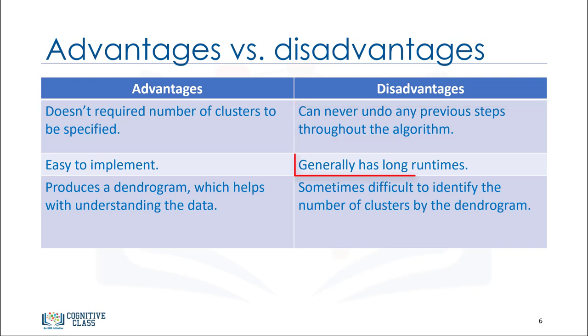Second, the time complexity for the clustering can result in very long computation times in comparison with efficient algorithms such as k-means. Finally, if we have a large dataset, it can become difficult to determine the correct number of clusters by the dendrogram.